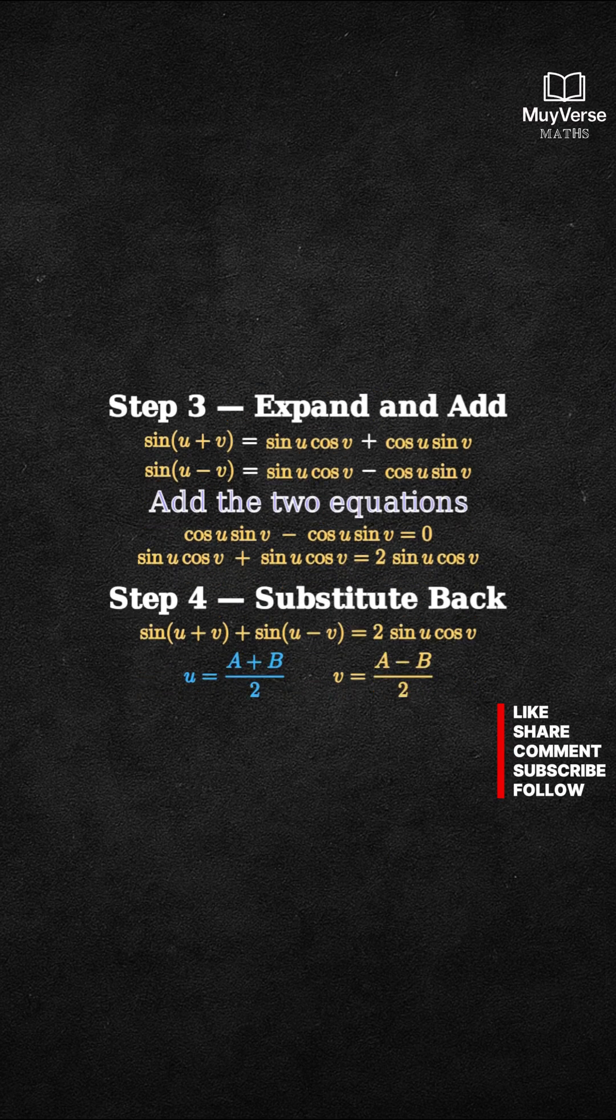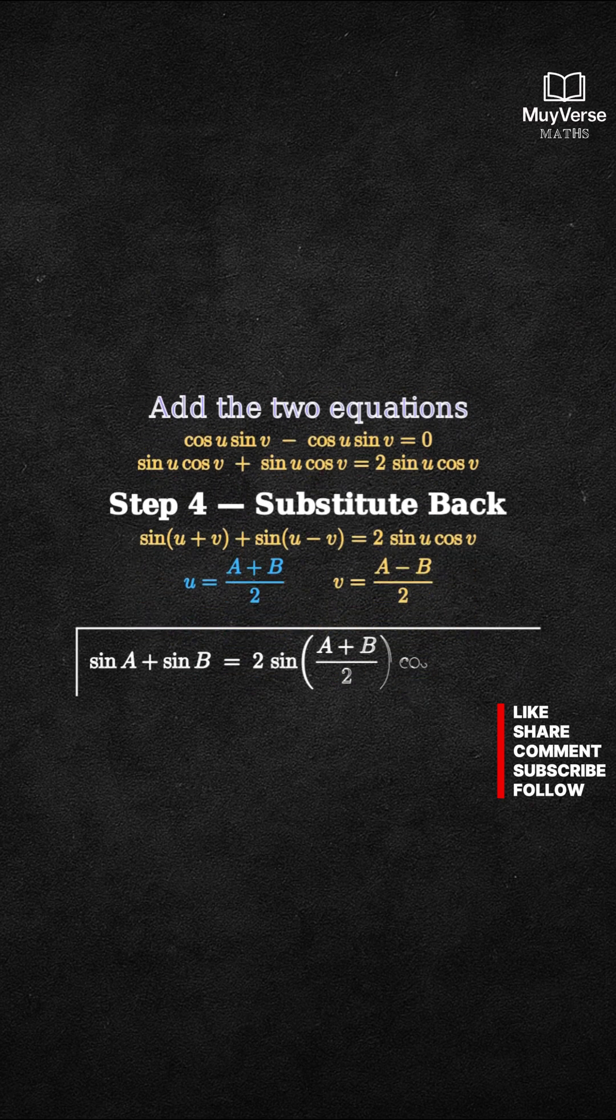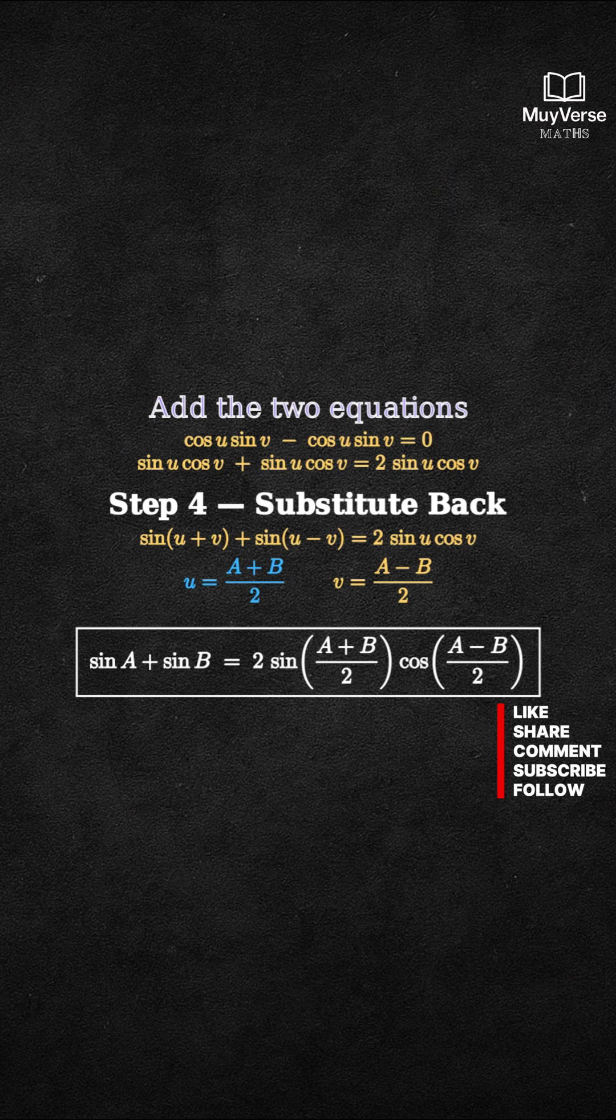Substitute back U equals A plus B over 2, and V equals A minus B over 2. We obtain sine A plus sine B equals 2 times sine of open parenthesis, A plus B over 2, close parenthesis, times cosine of open parenthesis.